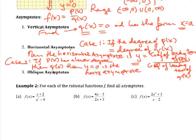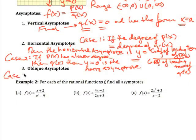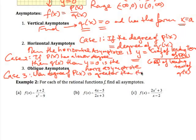Case 3: when the degree of p(x) is greater than the degree of q(x), this produces an oblique asymptote — a non-horizontal, non-vertical line of the form y = mx + c. To find it, we divide the lower-degree polynomial into the higher-degree polynomial.